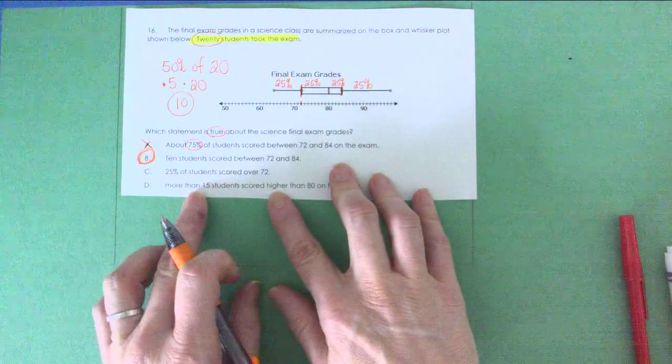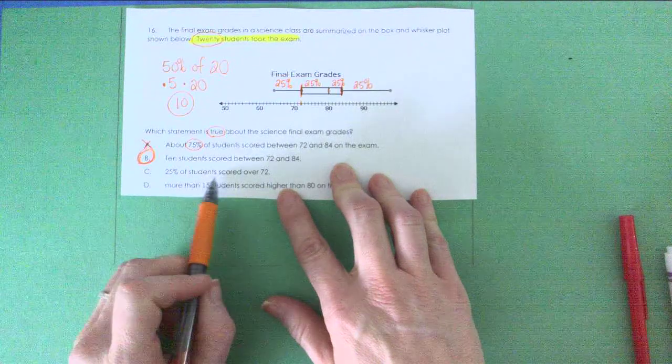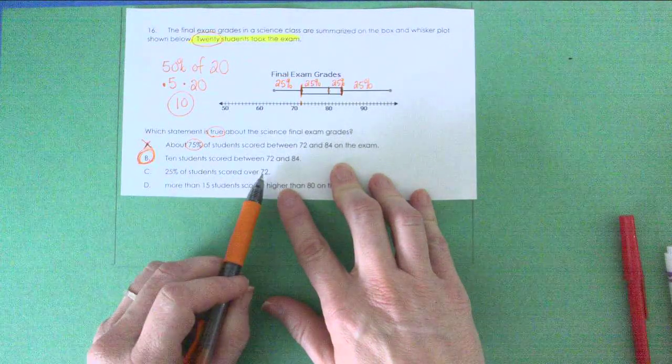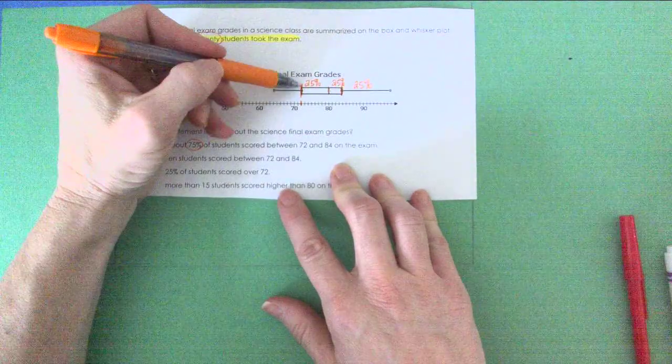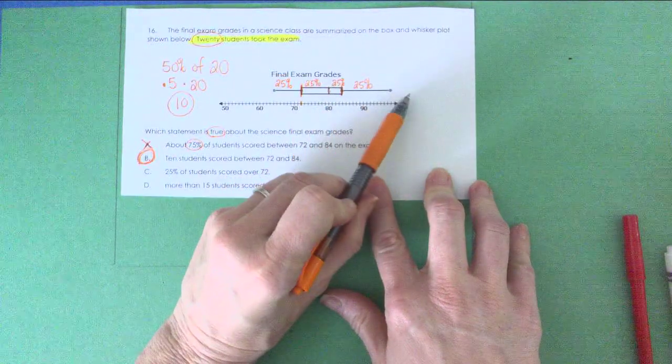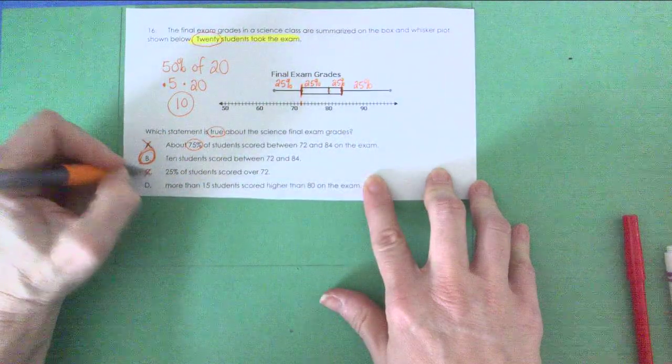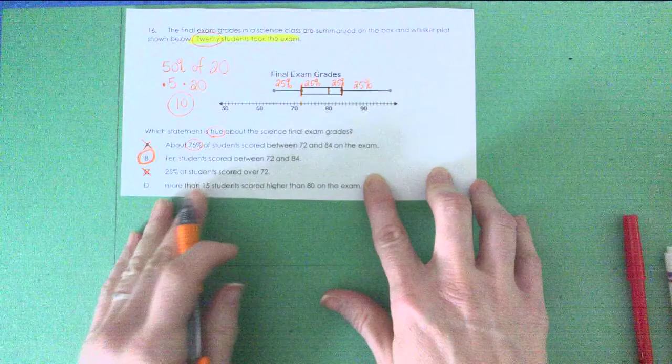Now, let's look at why C and D aren't true. C says 25% of students scored over 72. I would argue that. Here's 72. I would argue that 75% of students scored above 72. So it's definitely not that.